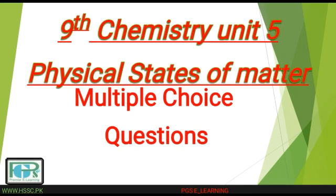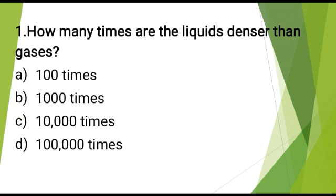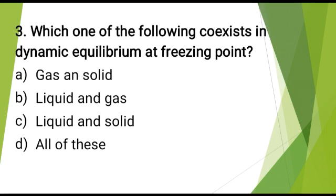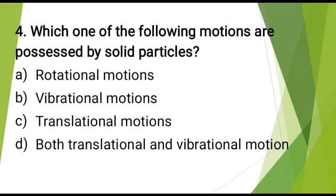Unit number 5 Multiple choice questions. How many times are the liquids denser than gases? The correct answer is: 1000 times. Gases are the lightest form of matter and their densities are expressed in terms of g·dm⁻³. Which one of the following coexists in dynamic equilibrium at freezing point? The correct answer is: liquid and solid. Which one of the following motions are possessed by solid particles? The correct answer is: vibrational motions.